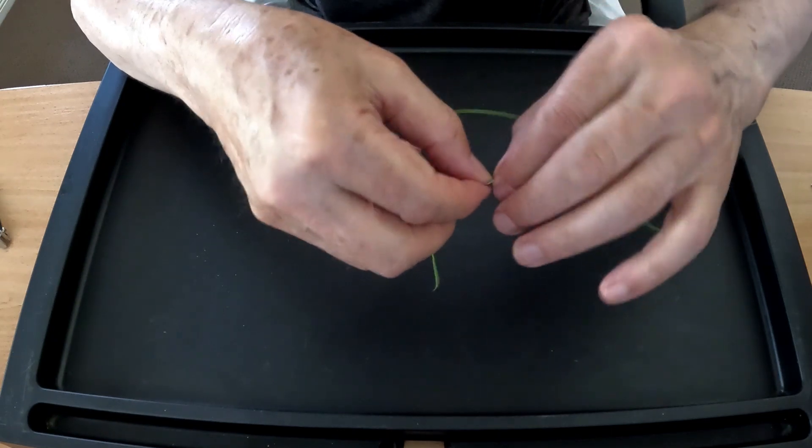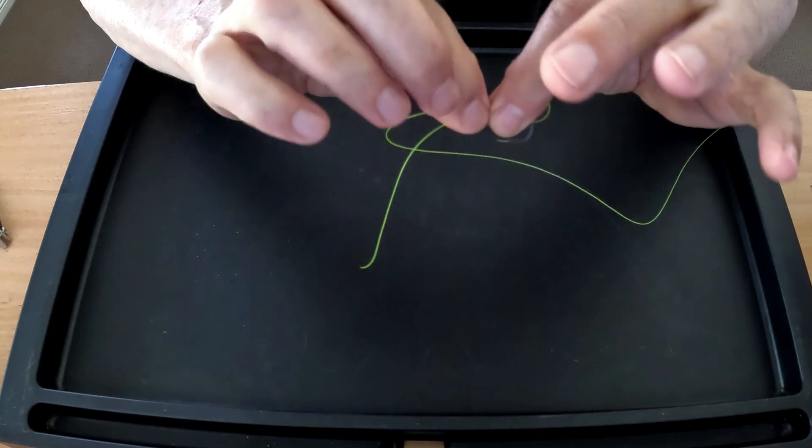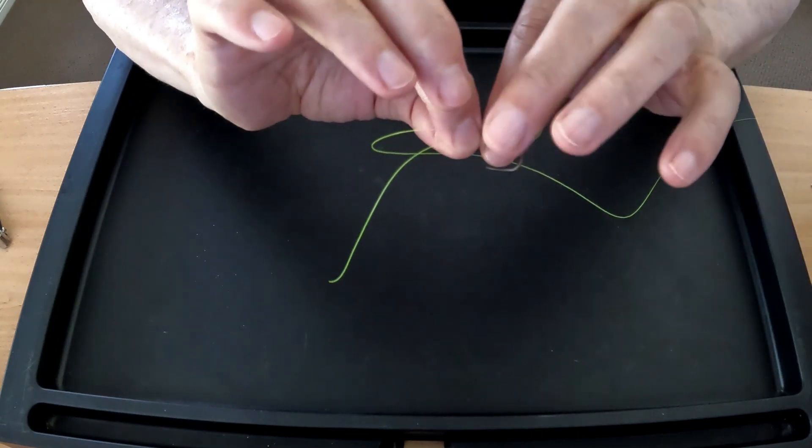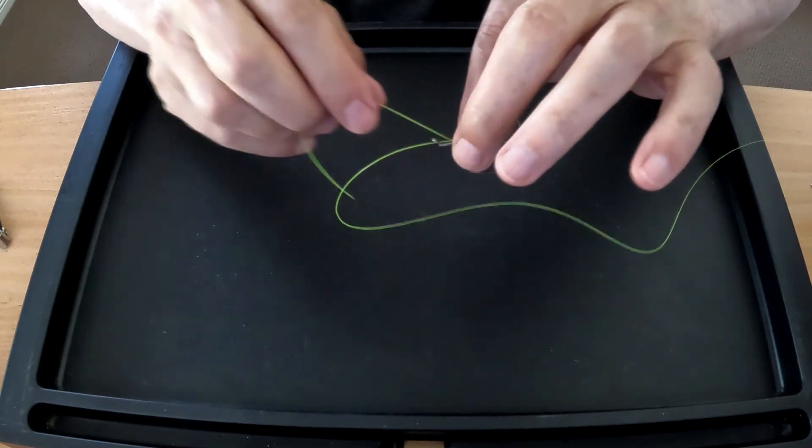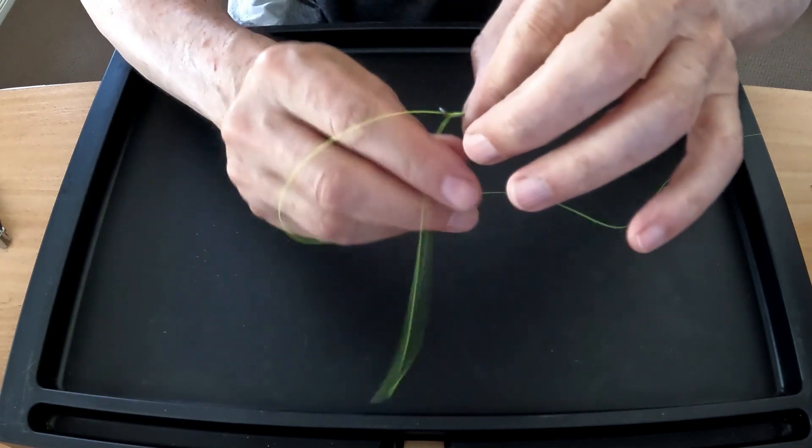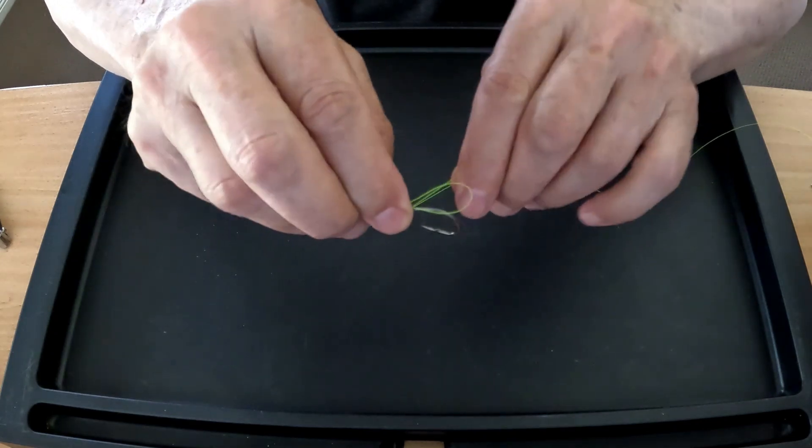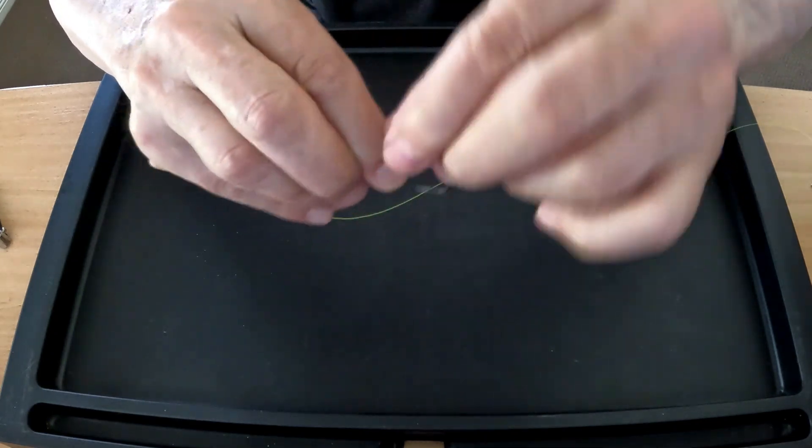So all I've done is I've held the line against the hook, created a loop. The next thing I'll do is I'll start winding this around itself. Now, what I usually do is I wind it once, hold that with my finger, and then I continue to wind it afterwards.